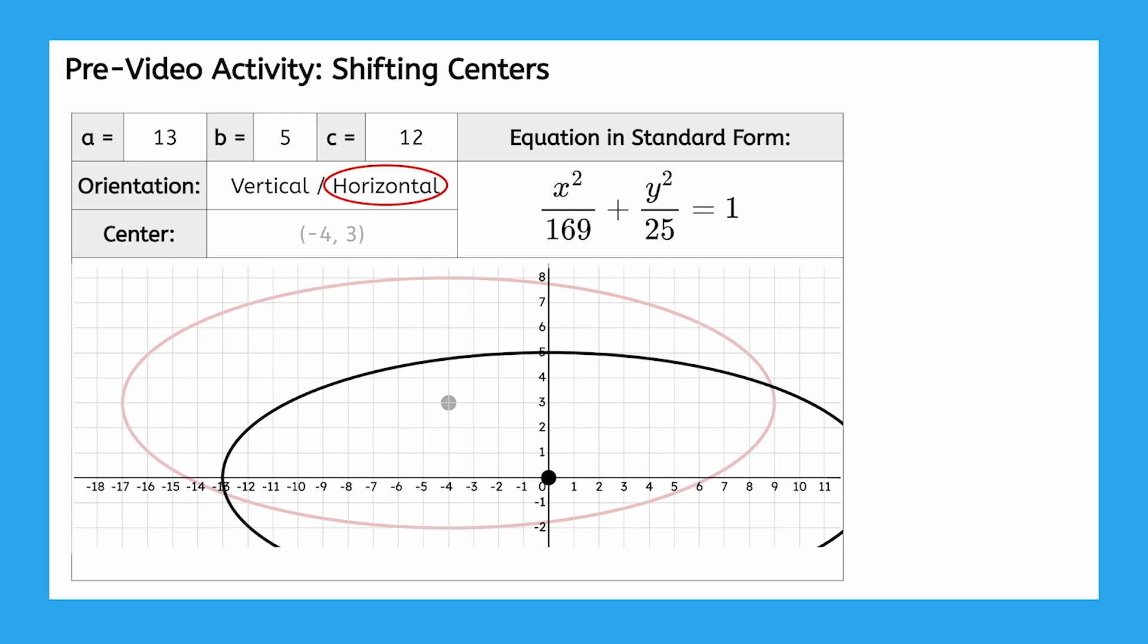Could this ellipse centered at the origin help us find the equation of our actual ellipse centered at negative 4, 3? How are these two ellipses related?